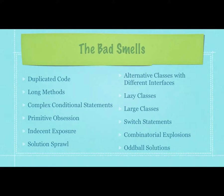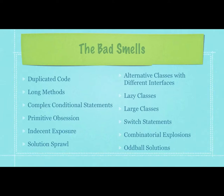Some examples of bad smells: duplicated code, which can be very obvious — seeing the exact code over and over — or subtle if duplication occurs using completely different code. Another bad smell is long methods. They hamper your ability to share logic compared to if those methods were broken into many smaller ones. Systems built with many small methods are easier to understand. In general, aim for methods no longer than 10 lines, with an average of approximately 5 lines. Complex conditional statements limit your ability to extend a system and provide reuse.